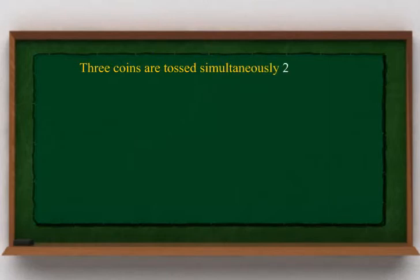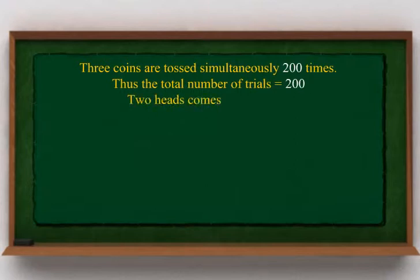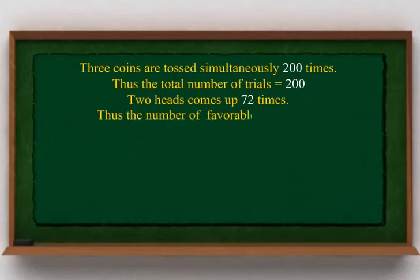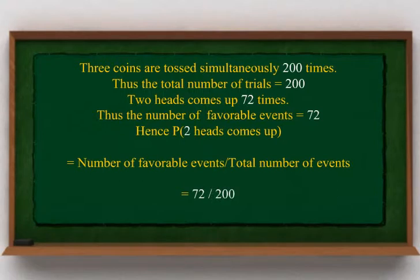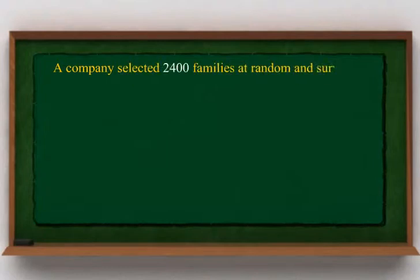Three coins are tossed simultaneously 200 times. Thus, the total number of trials is equal to 200. Two heads came up 72 times; thus, the number of favorable events is equal to 72. Hence, P(2 heads) equals number of favorable events divided by total number of events equals 72 divided by 200, which equals 9 divided by 25.